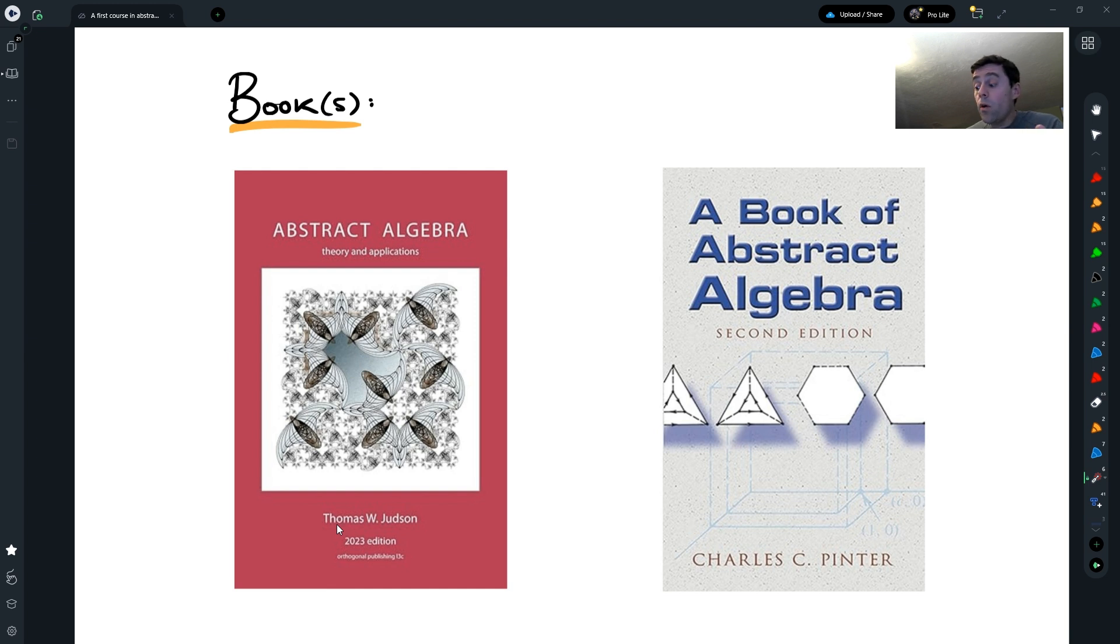There are many other books in algebra that one can have a look at. For example, A Book of Abstract Algebra by Pinter. That is a very popular book and it's also very inexpensive. So you can use that one or many other such books.